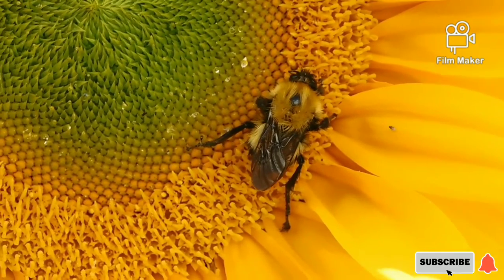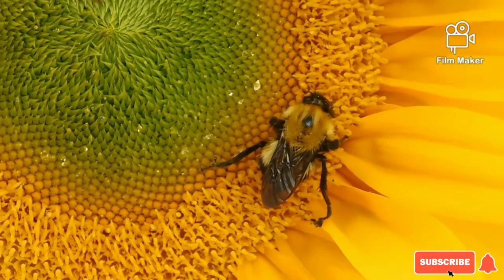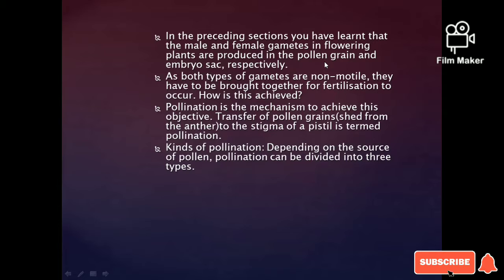In the preceding sections you have learned that the male and female gametes in flowering plants are produced in the pollen grain and embryo sac respectively.